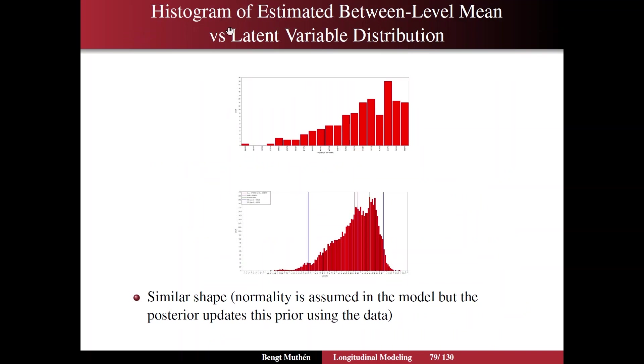...you can take a look at the histogram of the estimated between-level mean versus the latent variable distribution. So this was alternative 2, the estimated between-level mean. And here you have the latent variable distribution, which is a more thorough-going representation of this distribution. So you see the smoothness here, but it represents the same general shape. And it's a little bit non-normal.